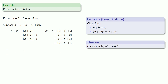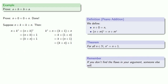But remember, if you don't find the flaws in your argument, someone else will. We should look at this proof very carefully. This first step here, we regrouped k plus one plus n as k plus one plus n — and that's the associative property of addition, which we haven't proved.